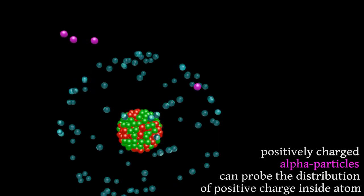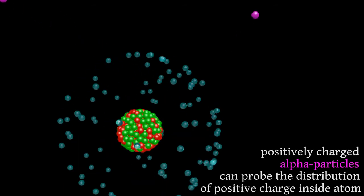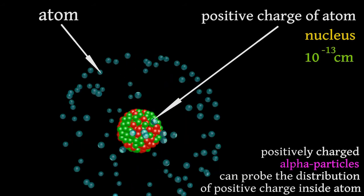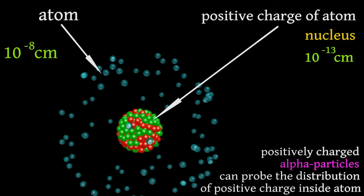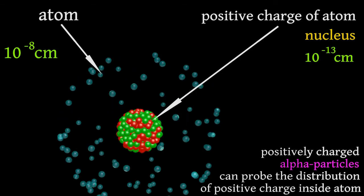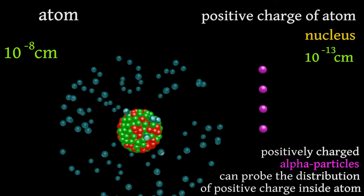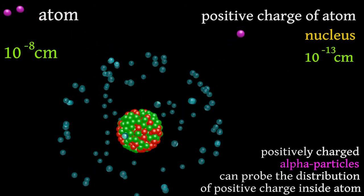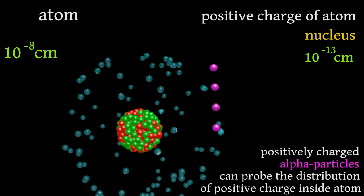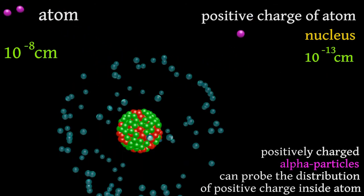in order to explain the experimentally observed scattering of alpha particles at angles greater than 90 degrees, it is necessary to substantially reduce the size of the sphere in which the positive charge of the atom is situated. According to his calculations, this size is of the order of 10 to the power of minus 30 centimeters, while the size of an atom is of the order 10 to the power of minus 8 centimeters. Rutherford's model perfectly described the experimental data. However, this model gave rise to a lot of questions. Answers were obtained only after the construction of a new science, quantum mechanics.